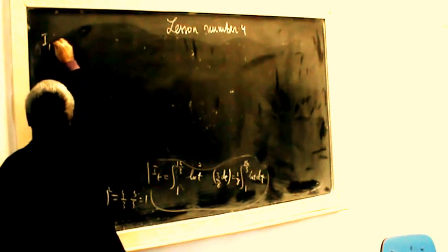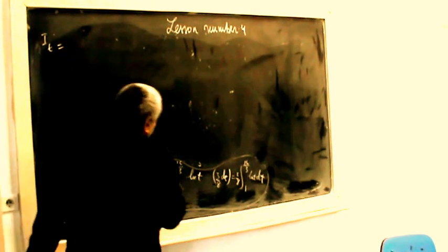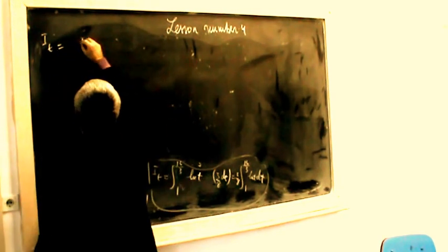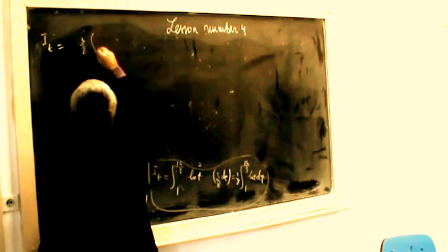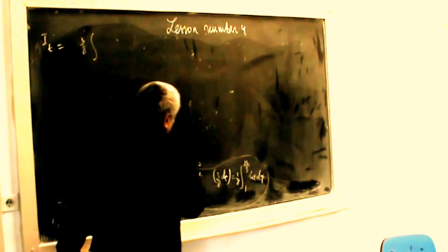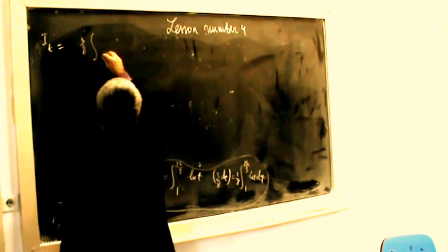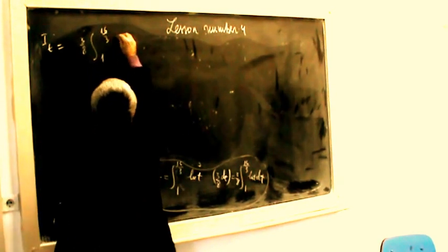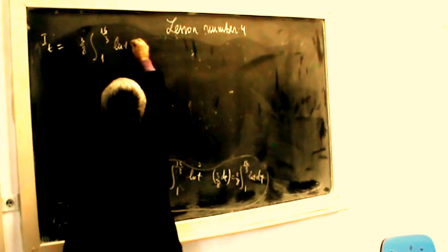E total equals 3 divided by 8 times the integral from 1 to 16 divided by 3, indeed proceeding with integration by parts.